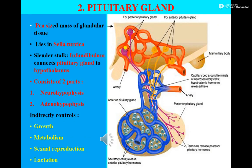Number two is the pituitary gland. Pituitary gland has a size equal to a pea seed and consists of a mass of glandular tissue. It is situated in a small cavity of the skull known as sella turcica. It is attached to the hypothalamus by means of a stalk known as the infundibulum.